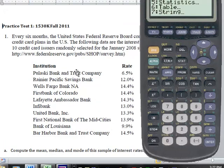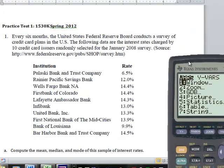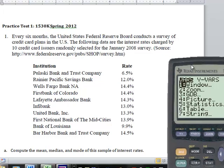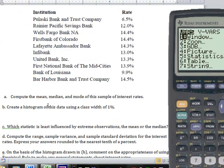This is practice test one, actually spring 2012. Every six months, the U.S. Federal Reserve Board conducts a survey of credit card plans. The following data are the interest rates charged by ten credit card issuers randomly selected from the January 2008 survey. We need to compute the mean, median, and mode of this sample of interest rates.